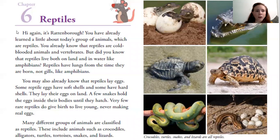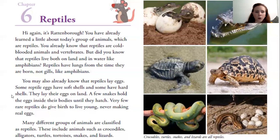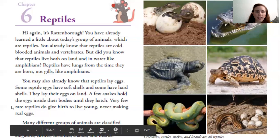Hi again, it's Rattenborough. You have already learned a little about today's group of animals, which are reptiles. You already know that reptiles are cold-blooded animals and vertebrates. But did you know that reptiles live both on land and in water like amphibians? Reptiles have lungs from the time they are born, not gills like amphibians. You may also already know that reptiles lay eggs. Some reptiles have soft shells and some have hard shells. They lay their eggs on land. A few snakes hold their eggs inside their bodies until they hatch. Very few rare reptiles do give birth to live young, never making real eggs.